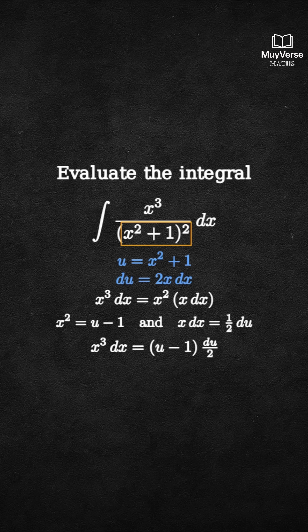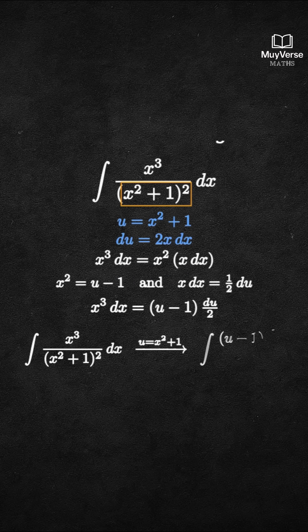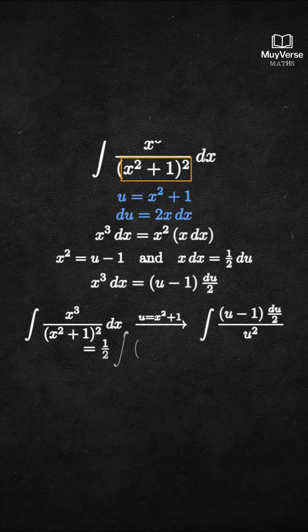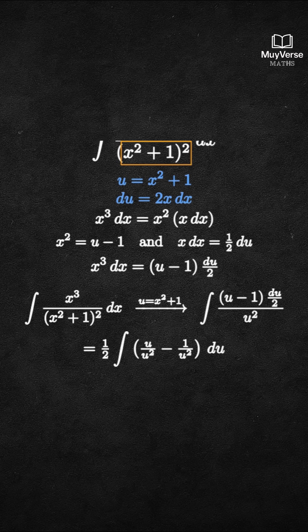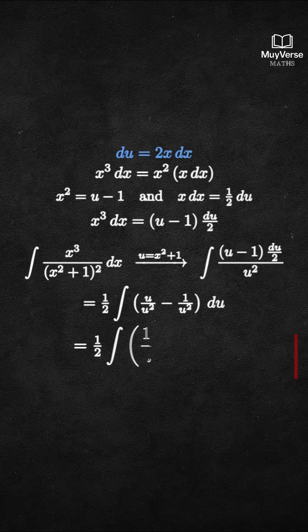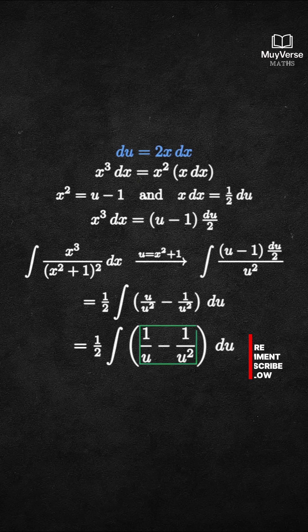Now substitute everything into the integral. The denominator becomes u squared, and the numerator becomes (u minus 1) du over 2. So the integral equals 1 half times the integral of (u over u squared minus 1 over u squared) du, which simplifies to 1 half times the integral of 1 over u minus 1 over u squared du.